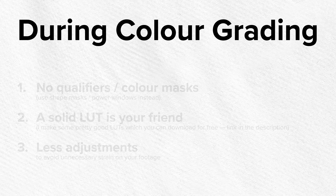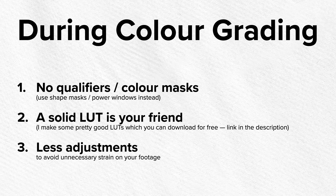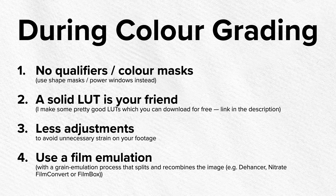Number three: when grading, be mindful of your actions and revise prior adjustments rather than throwing more adjustments at it. Always challenge yourself to reach your desired result with what you've already applied. Last but not least — and this may sound crazy — use a film emulation plugin. If you want to achieve a film look anyway, do it properly. These plugins split your image and recombine it to apply proper film grain emulation. To be clear, this doesn't create color information out of thin air, but it helps to disguise the banding.